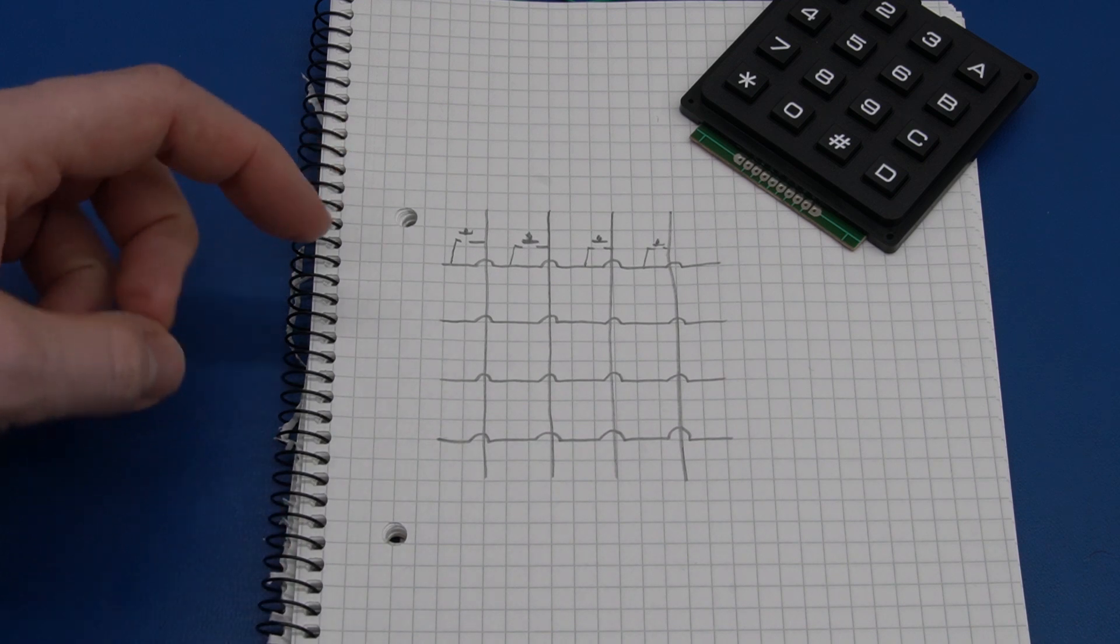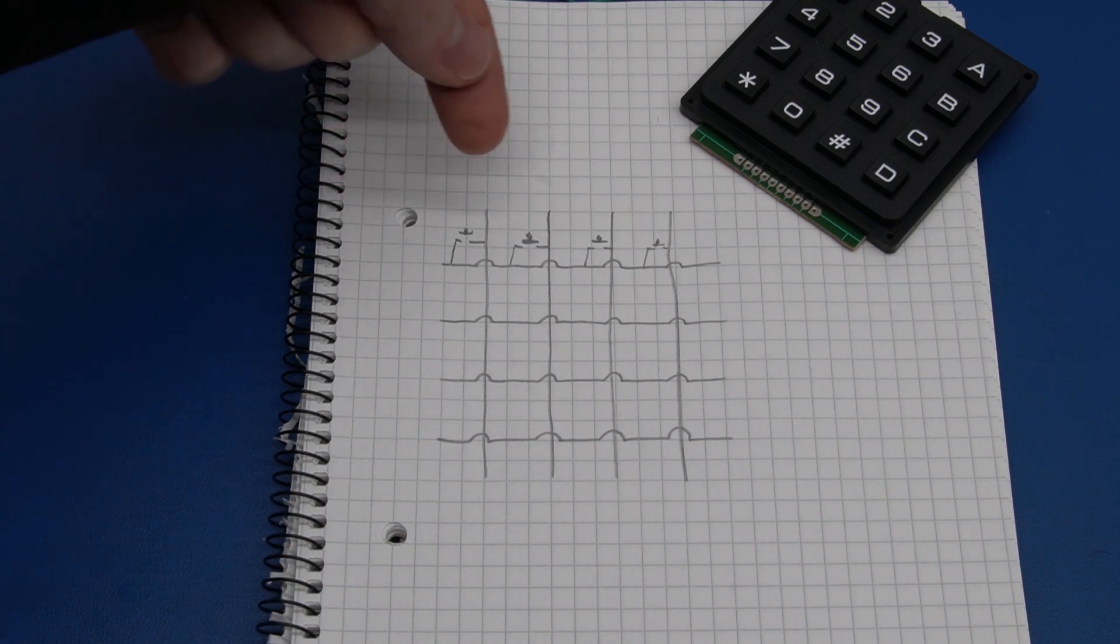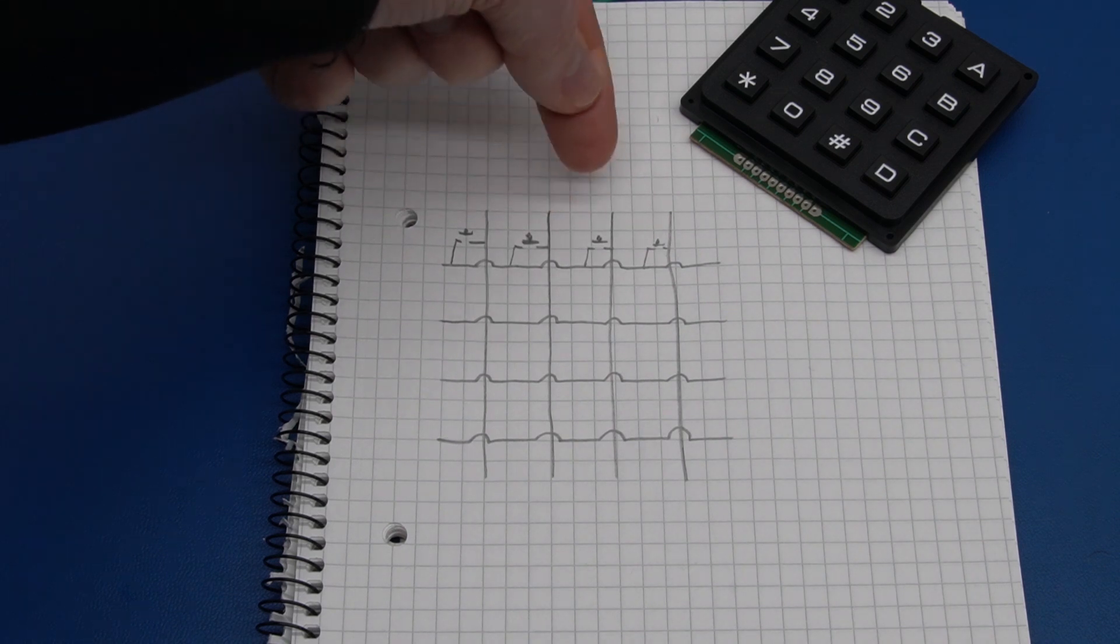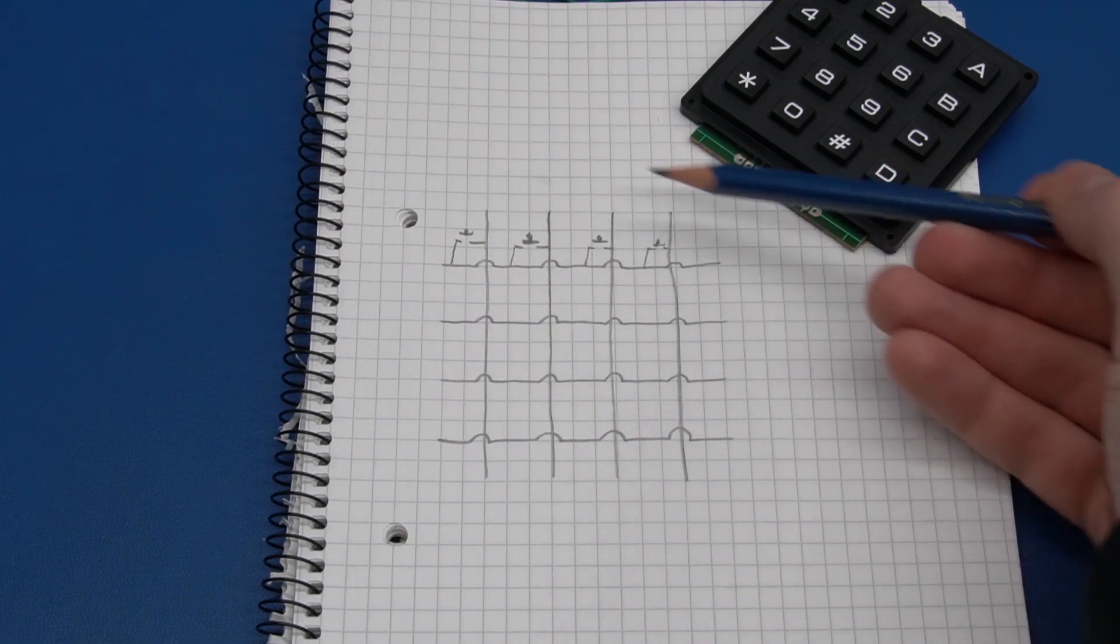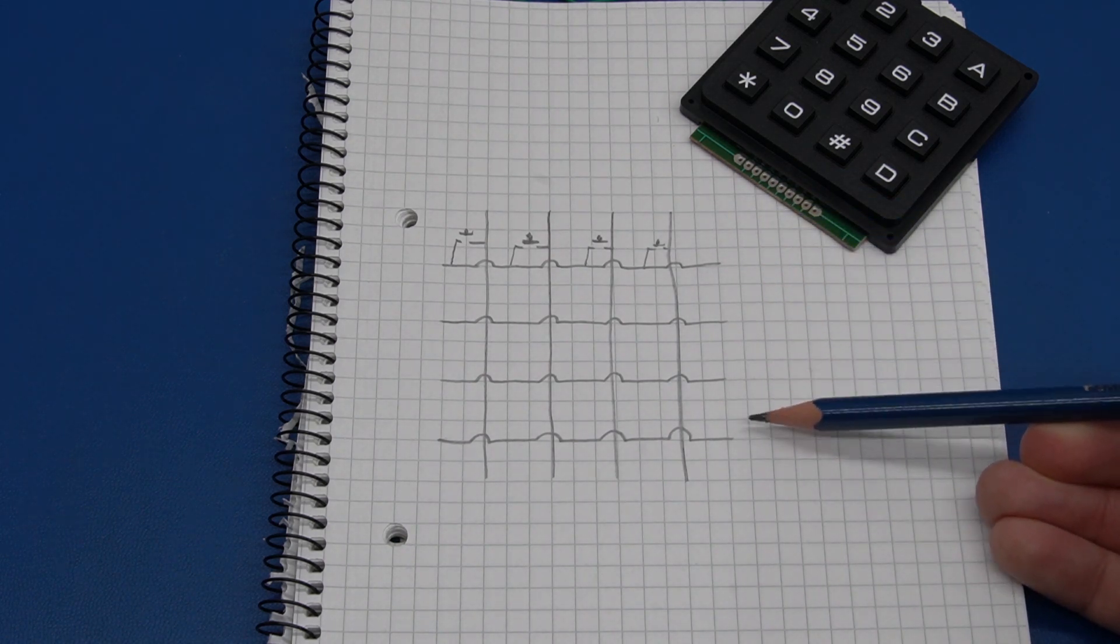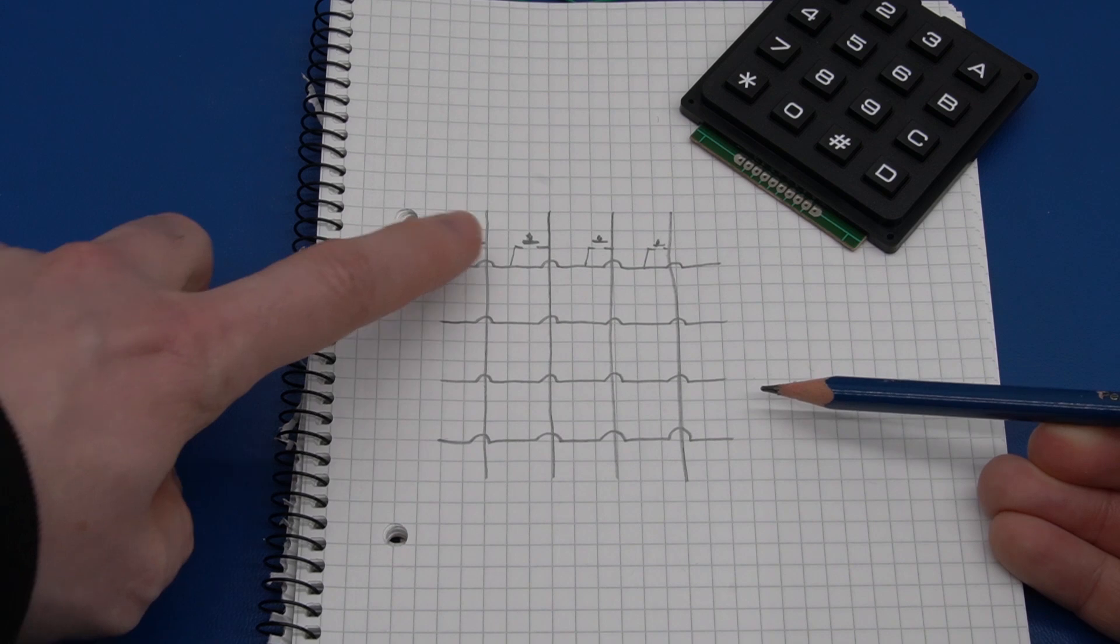What the routine in the microcontroller will do is it will alternate putting high voltage on here and for every column, it will read the state of each of the rows. So if we press this button,